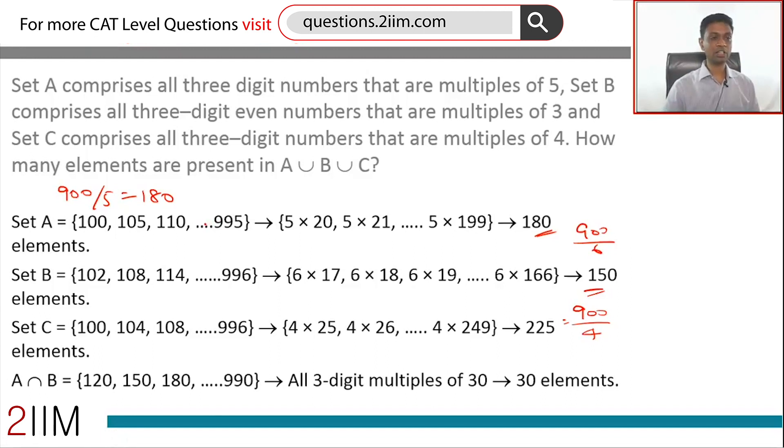Now let's go to A intersection B, B intersection C, C intersection A. A intersection B is effectively multiples of 5 and multiples of 6—multiples of 30. 900 by 30, again an integer, this works out fine for us. This is 30.